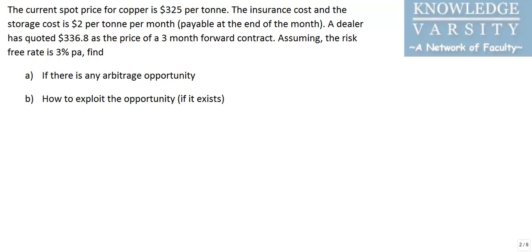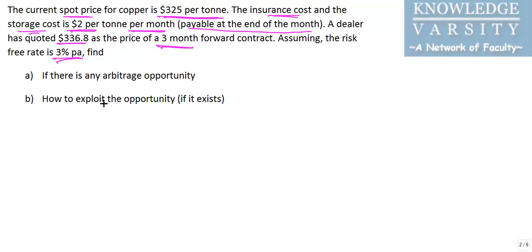Here we are solving a problem related to the forward price and we want to find out if there is any arbitrage opportunity available. The problem says that the current spot price for copper is $325 per ton, and the insurance and storage cost is $2 per ton per month, payable at the end of the month. A dealer has quoted $336.8 as the price of a three-month forward, and the risk-free rate is 3% per annum. Our job is to find out if there is any arbitrage opportunity and, if so, how to exploit it.